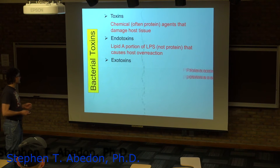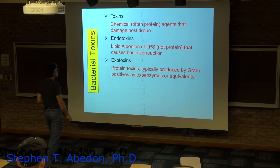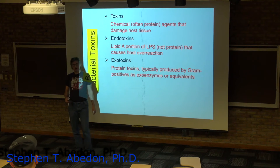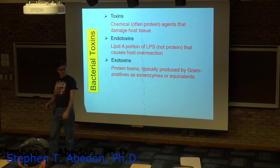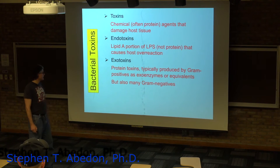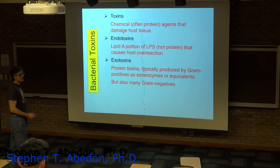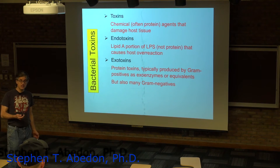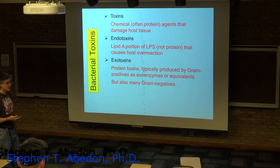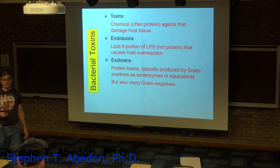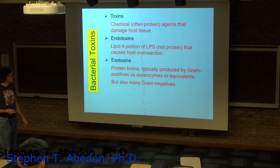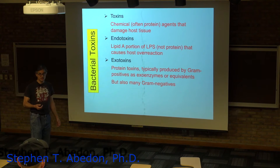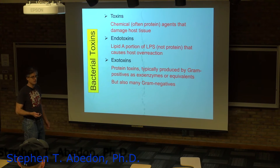And then there's the exotoxins. The exotoxins are proteins. They're typically associated with the gram-positives, but you also find them in the gram-negatives. And these things are very specific in how they damage our tissues, and they also tend to be very, very toxic. So very small amounts can cause large amounts of disease, such as with botulism toxin.